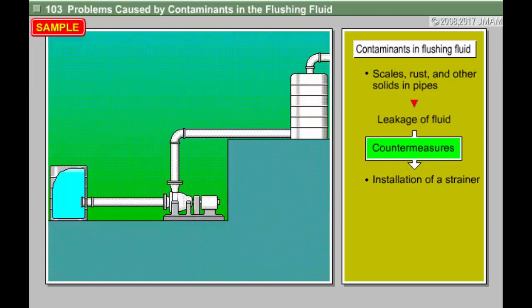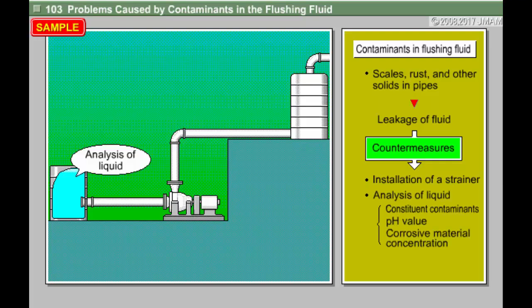When problems caused by contaminants occur frequently, we can analyze the liquid to find out the constituent contaminants and corrosion factors, such as pH value and corrosive material concentration.